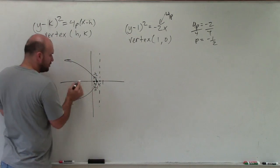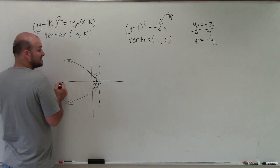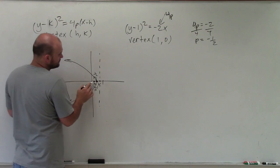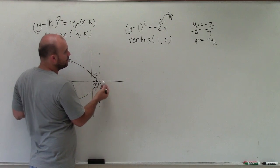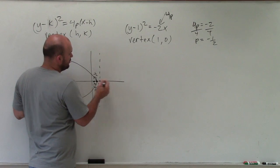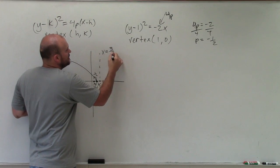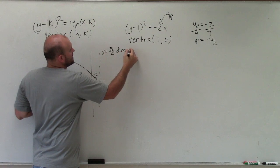Since we know that the x-axis is going to act as my axis of symmetry for this case, the directrix is going to be a vertical line. Where does the directrix intersect? It intersects at 1 and 1 half, which would be 3 halves. And since it's vertical, I could say x equals 3 halves is my directrix.